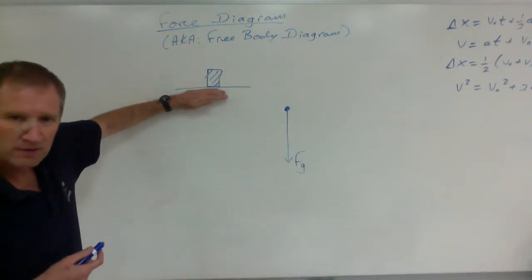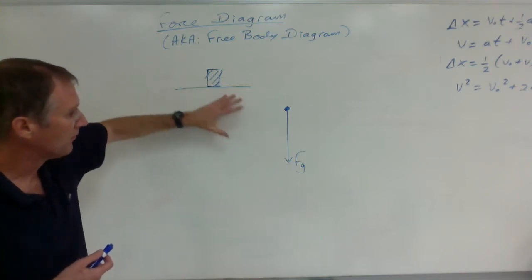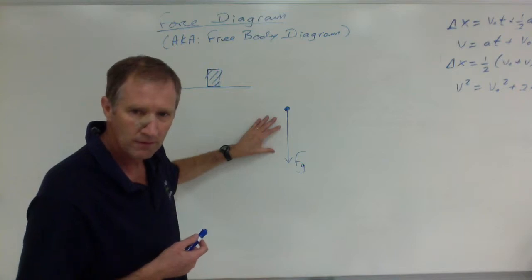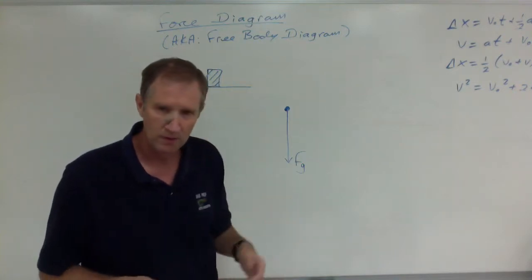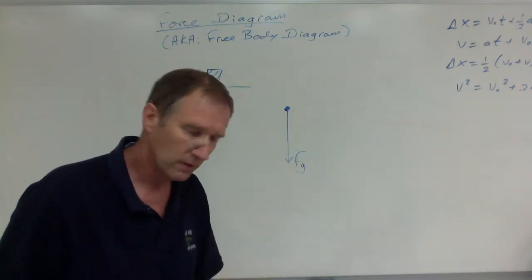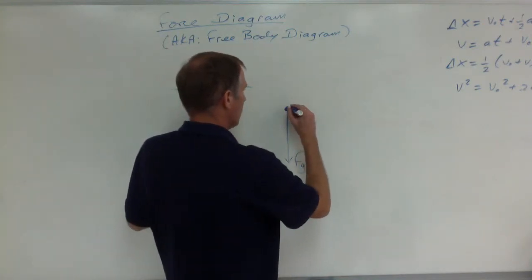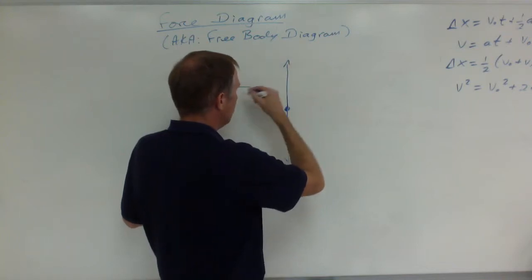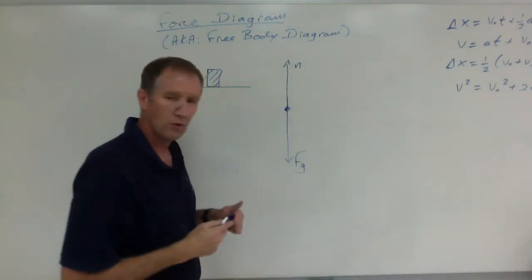Well, this thing's at rest on a table, so there has to be some other force balancing this out because that would be something in free fall. If the only force acting on it is gravity, then it would be falling down. But the table is pushing up on it, electromagnetically pushing up on it. And that is an example of a normal force.